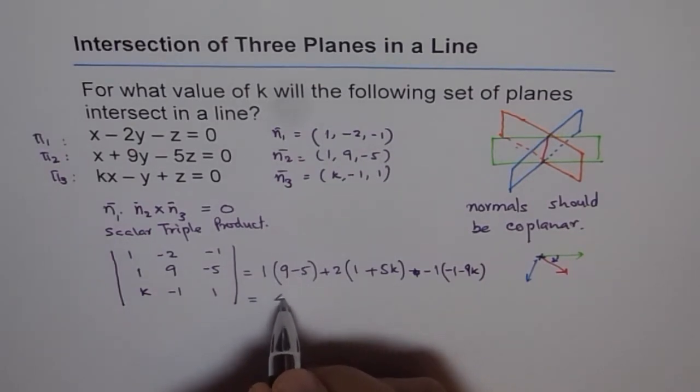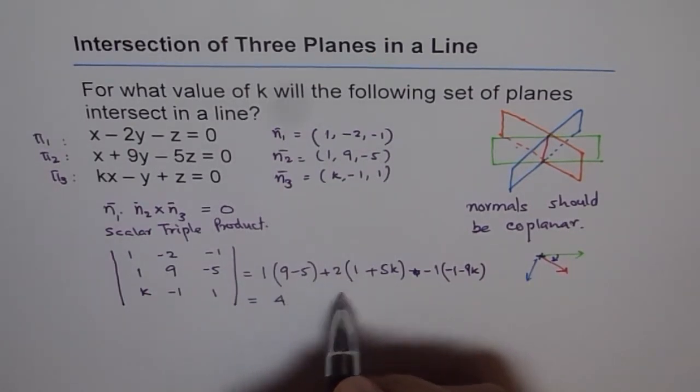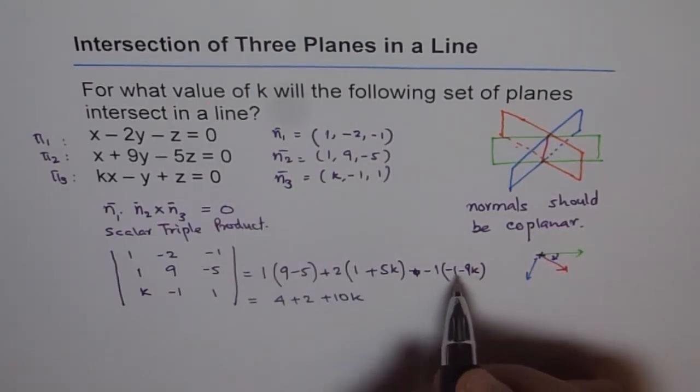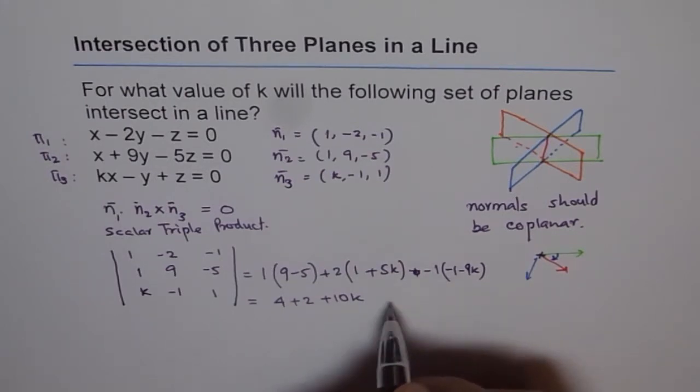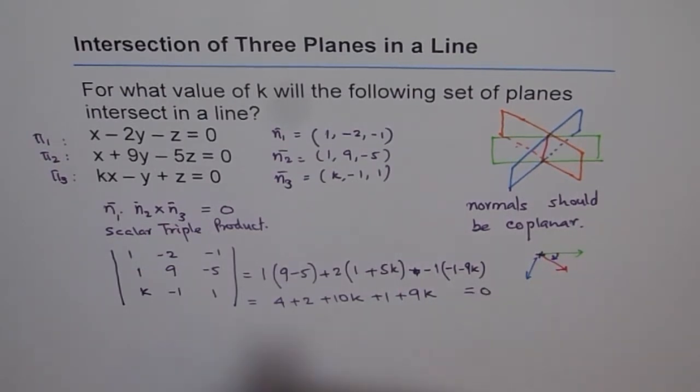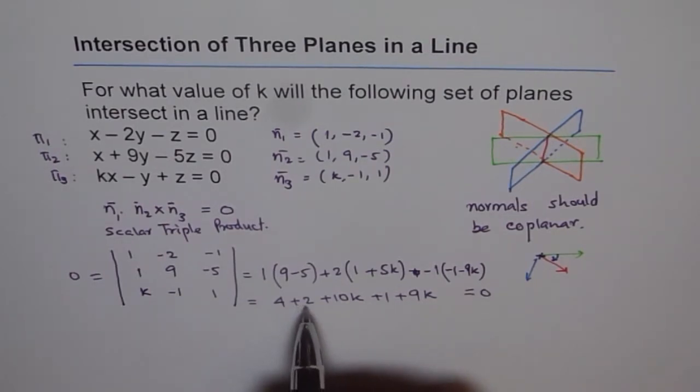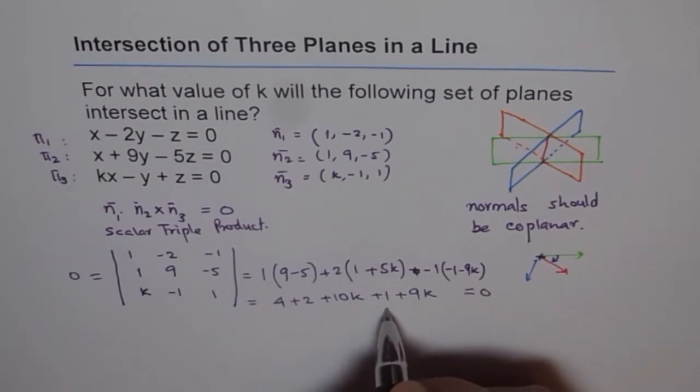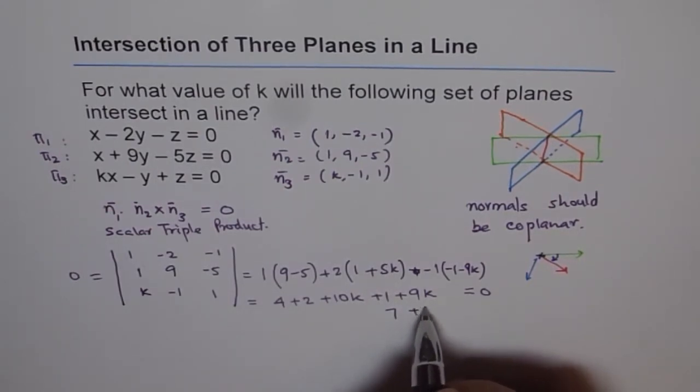So we get this equals to, 9 minus 5 is 4 and this is like plus 2 plus 10k minus of minus will make it plus 1 and minus with plus 9k. And this should be equal to 0. So 0 equals to this for these planes to intersect in a line. So now let's solve for it. So we get 4 plus 2 is 6 plus 1 is 7.